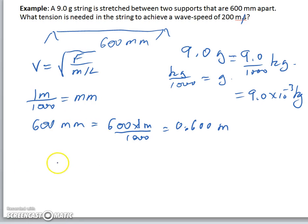Then we need to cross-multiply our equation. If we square both sides, we have V squared is equal to F divided by M divided by L. Multiply both sides by M divided by L, and we have an equation for the force.